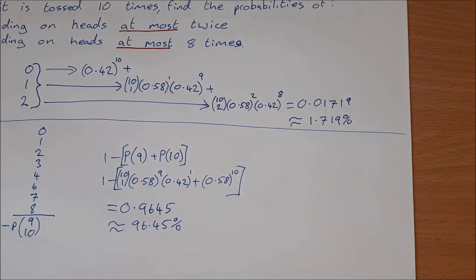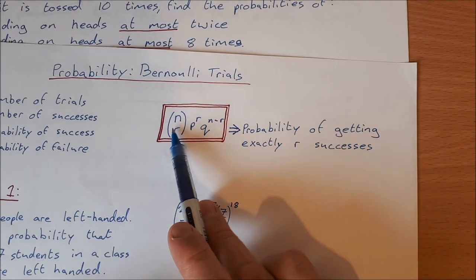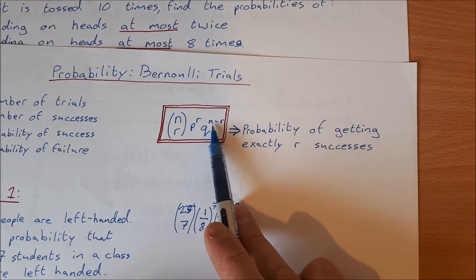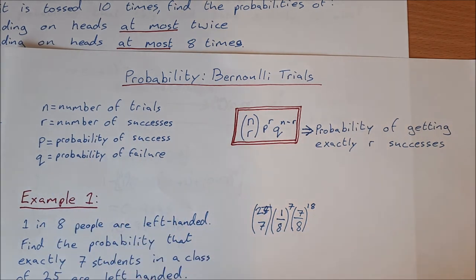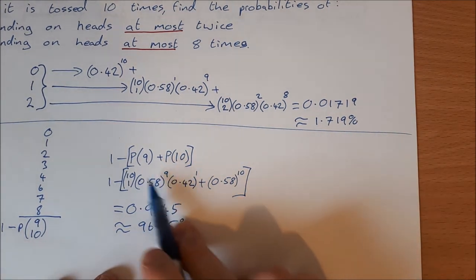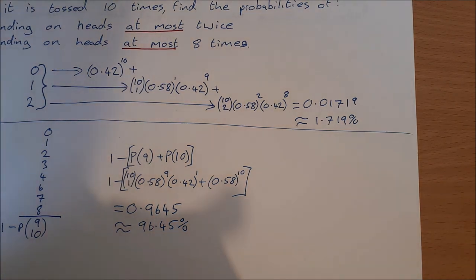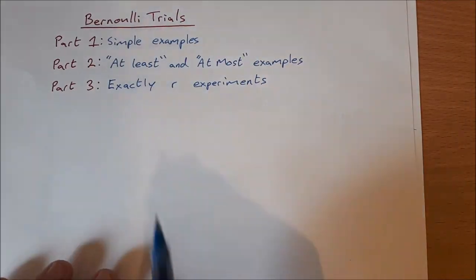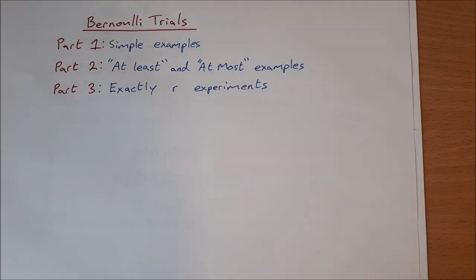Remember all of these questions can be taken back to the formula for Bernoulli trials: n choose r × p^r × q^(n−r), where n is the number of trials, r is the number of successes, p is the probability of success, and q is the probability of failure. I prefer to build up the formula rather than just applying it directly. Thanks for watching — part three covers 'exactly' questions and experiments, so I'll see you in the next one.